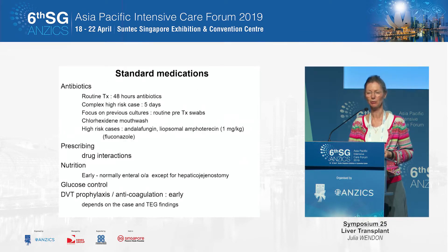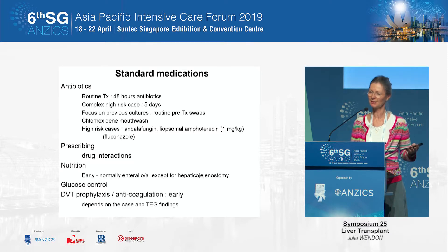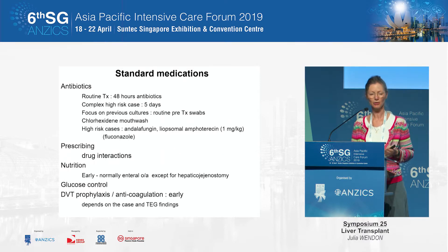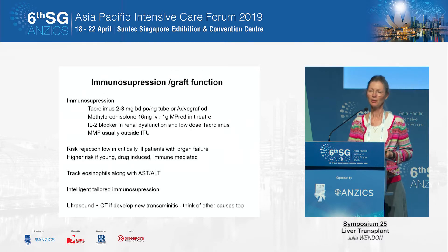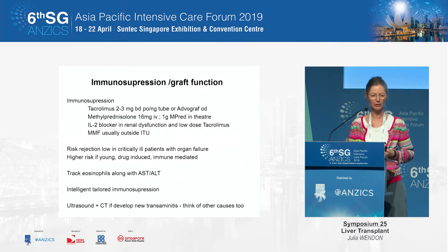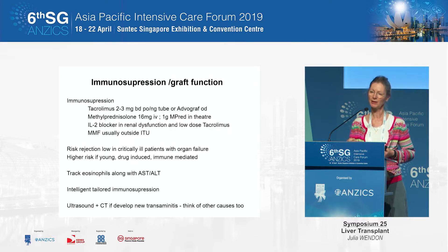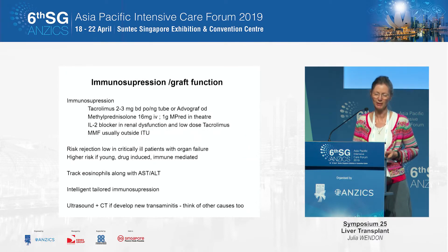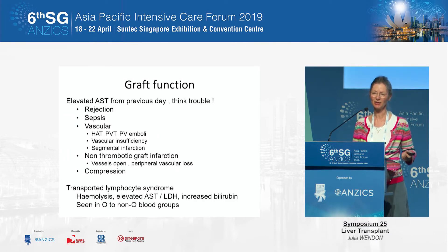Antibiotics: 48 hours for routine cases, five days for complex cases, and antifungals only for complex cases. DVT prophylaxis usually on return to theatre for prothrombotic patients as shown on TEG, and at day one for those who are not prothrombotic. The liver is incredibly immune-tolerant, so a low-dose tacrolimus or Advergraf regime with low-dose steroids; we use IL-2 blockers in those with renal failure, and mycophenolate or similar only outside the ITU environment. We do track eosinophils, and the data for that is quite interesting — if you get an AST going up at any time, you must ask what is wrong with this liver.